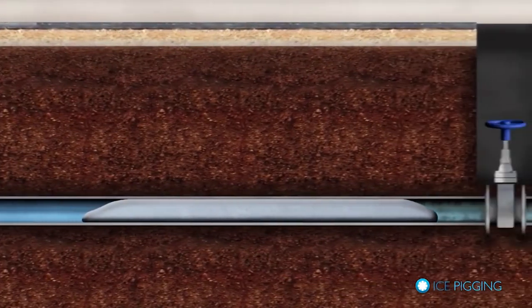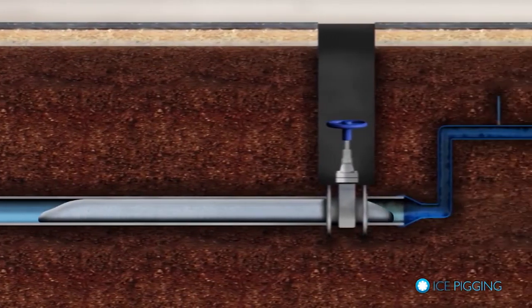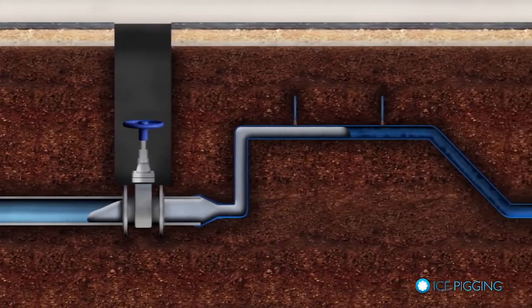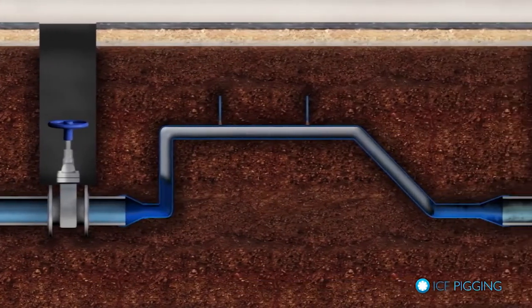Slush ice has properties of both a solid and a liquid which gives it unique capabilities for removing sediment, biofilm, or other loose material that may have accumulated in the pipe.